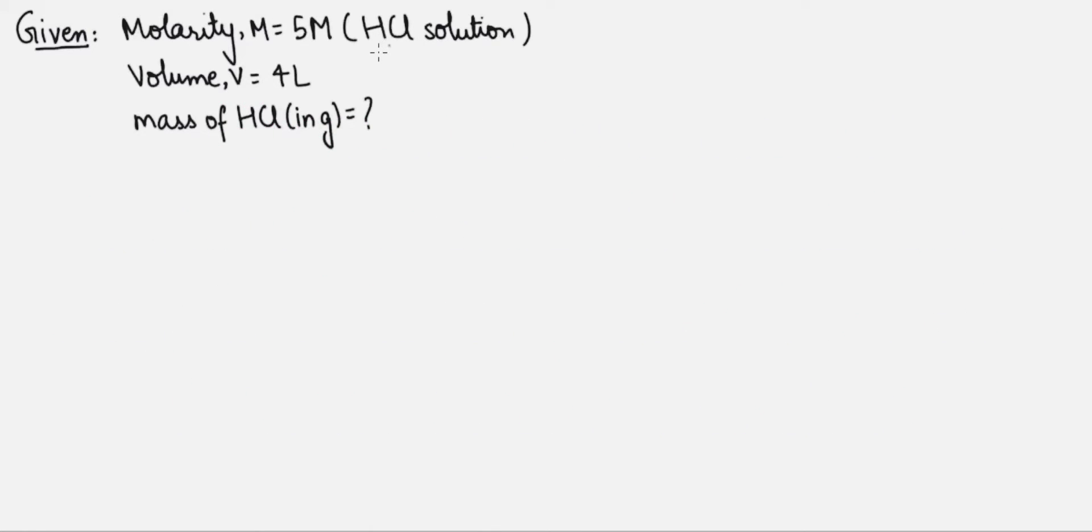Hello students, in this question we are given a solution of HCl which is to be prepared with the molarity of 5 moles per liter and the volume to be prepared is 4 liters. We have to find out the mass of hydrochloric acid in grams that is required.